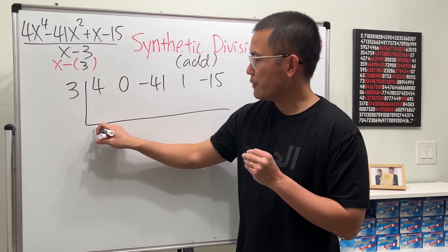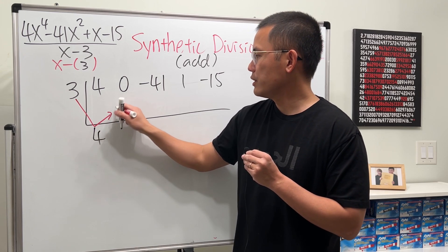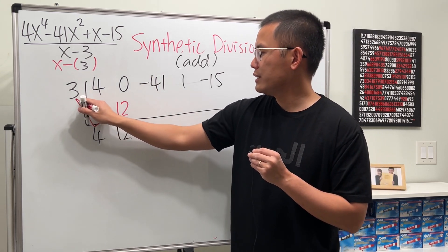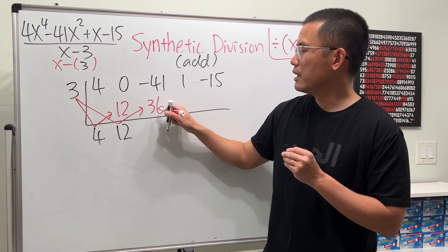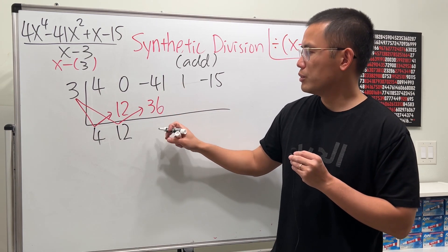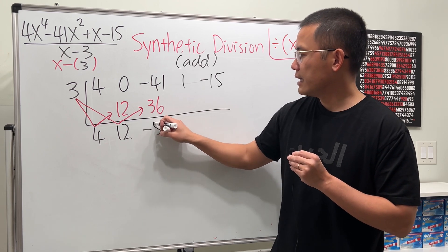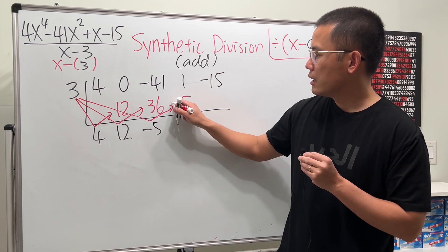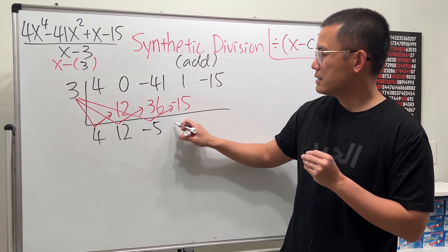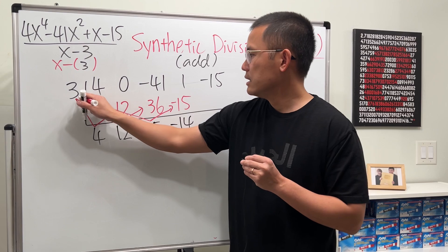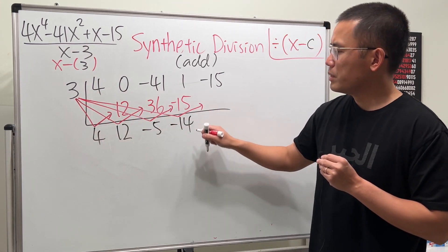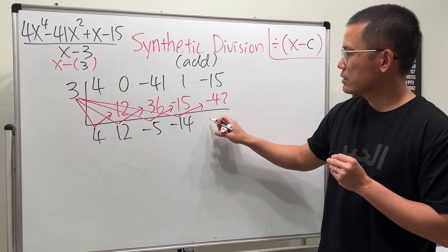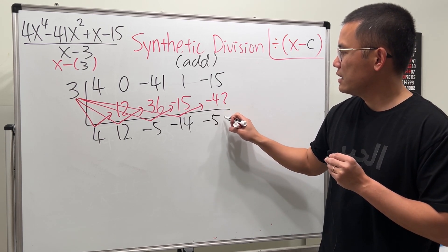Now, bring down the 4. Take 3 times 4, which is 12, and we put it here. Add them up. So that's another 12. 3 times 12 is 36. And we put it here. This plus that is going to be negative 5. Continue. This times this is negative 15. Right? And then you add them up. This is going to be negative 14. And lastly, this times that is going to be negative 42. And then we are going to add them up. So that's going to be negative 57.